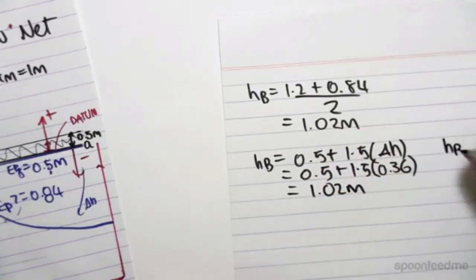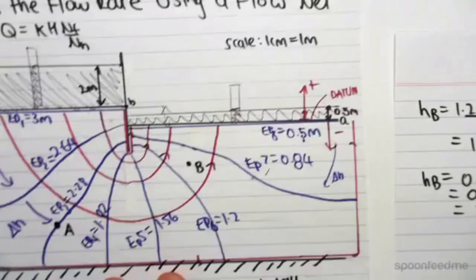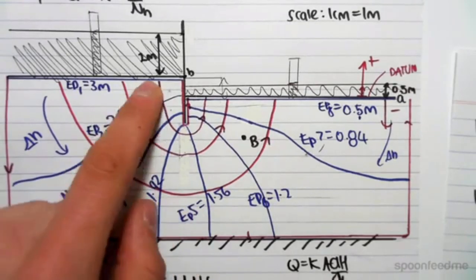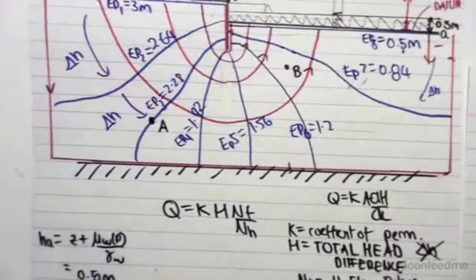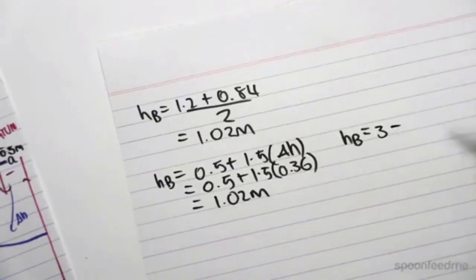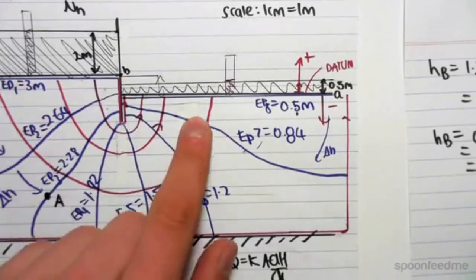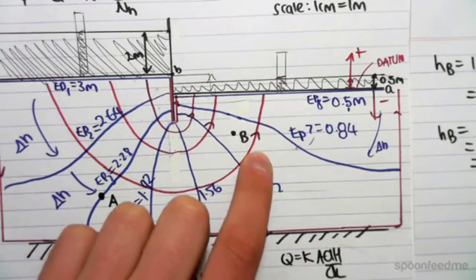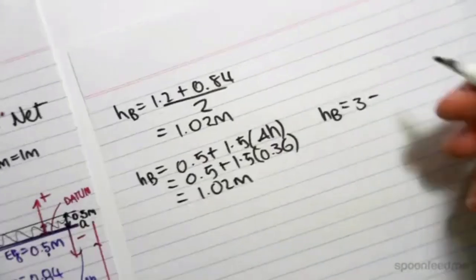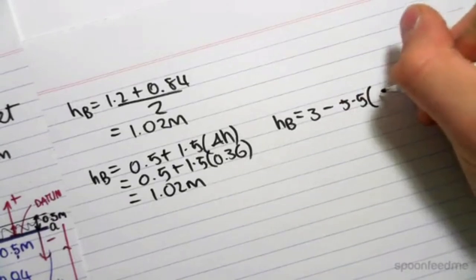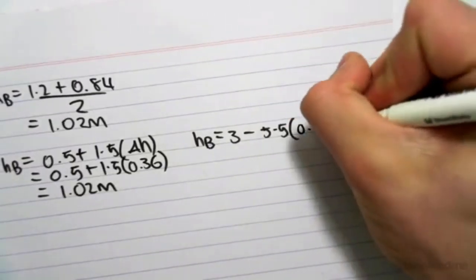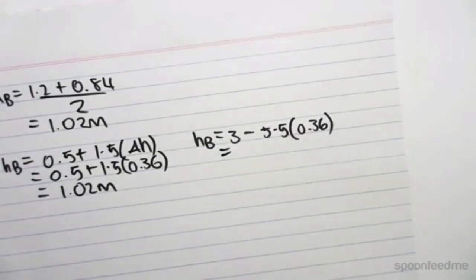We could have also done it going the other direction. So the head from this point here, going this way. The head there is 3 meters. We know the head at point B is 3 meters. Now we're going to be subtracting, because we're going from high head to low head. How many drops do we have? We have 1, 2, 3, 4, 5, 5 and a half drops to B. So 3 minus 5.5 times the change in H, which is 0.36.